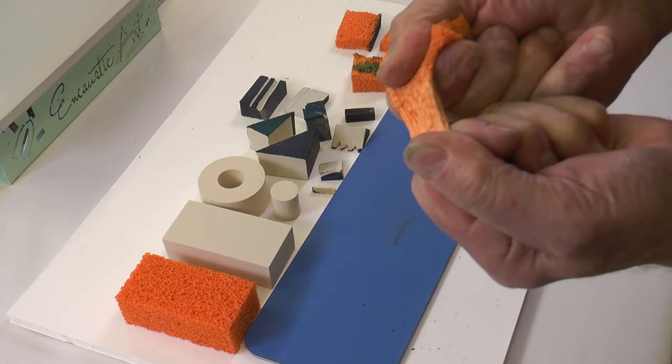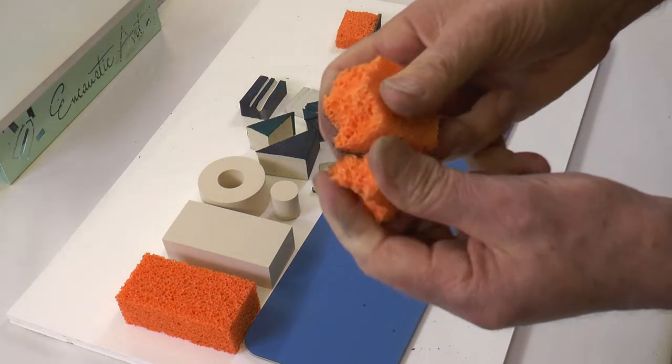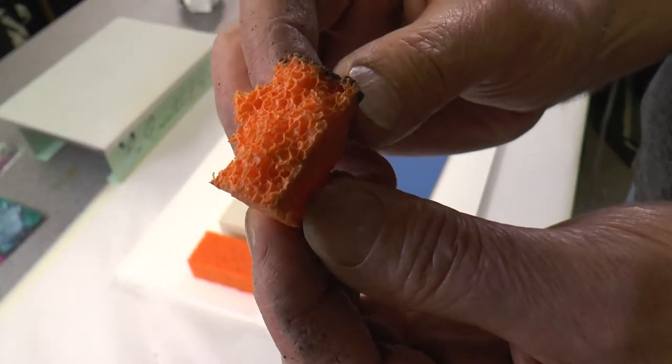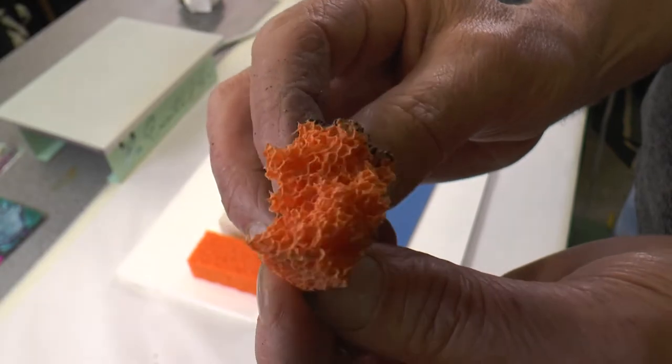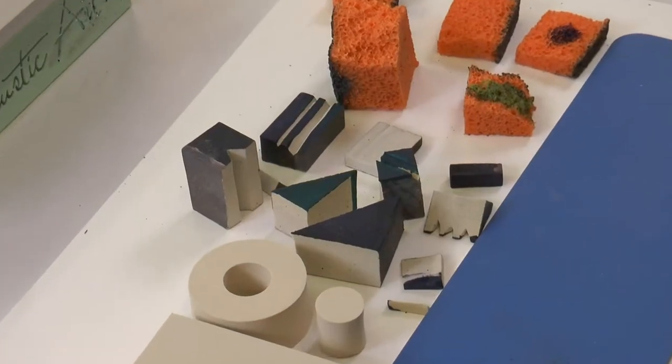If you're very strong, you might be able to tear it and create an uneven edge, which is, again, very useful for foliage. There are all sorts of shapes that can be made.